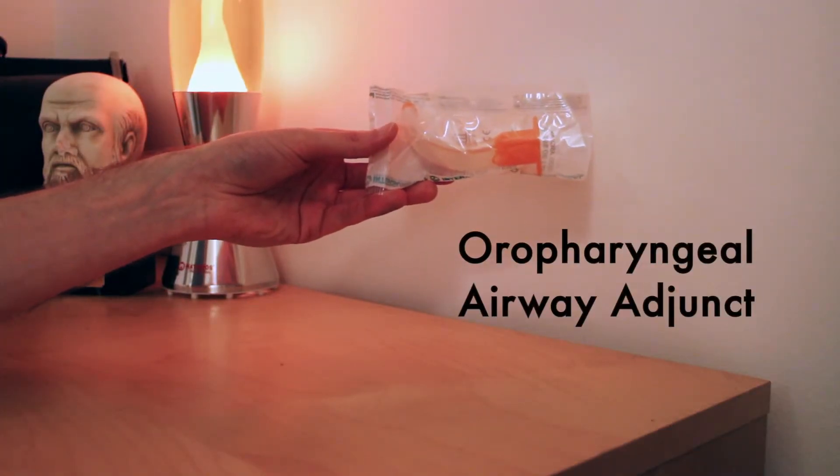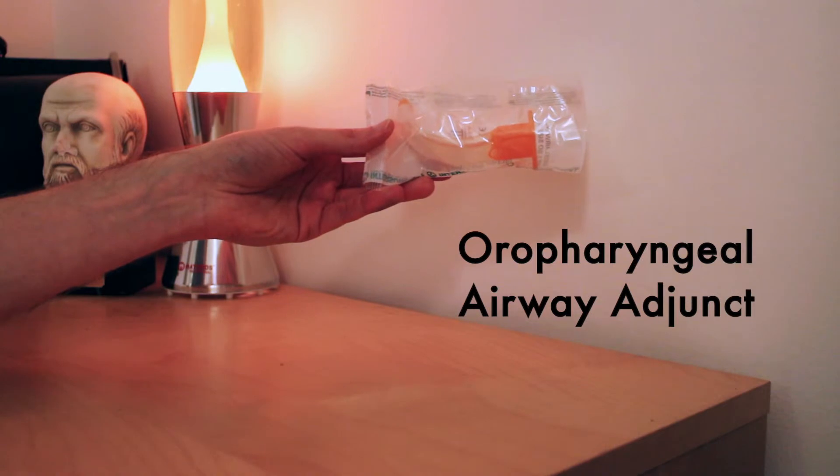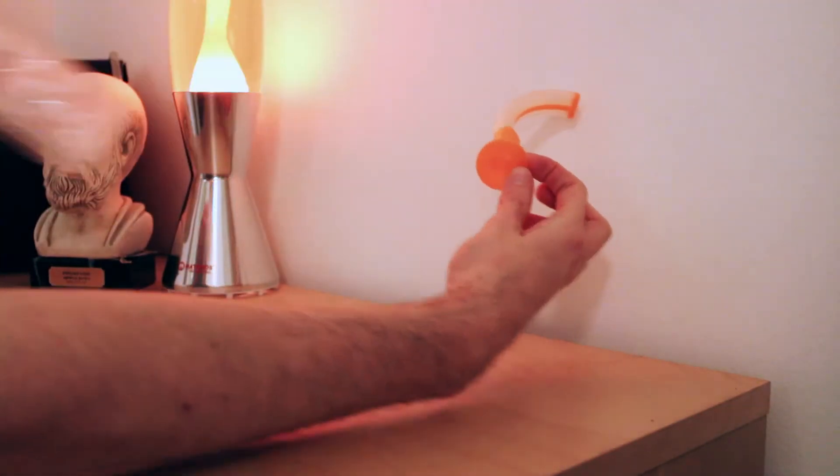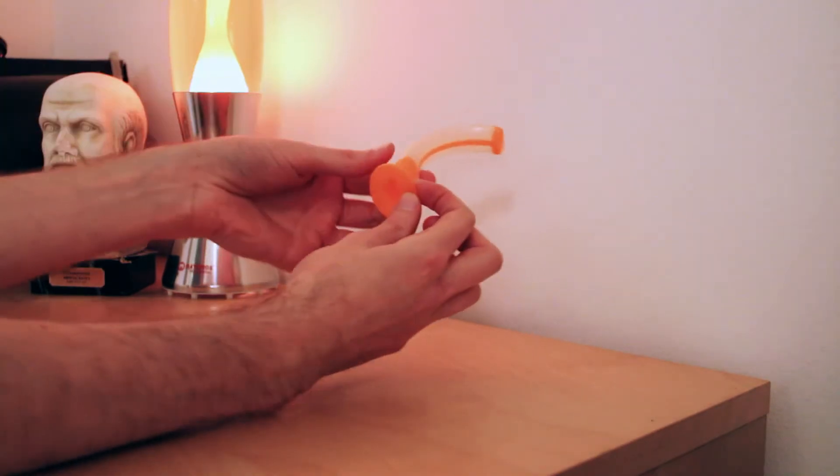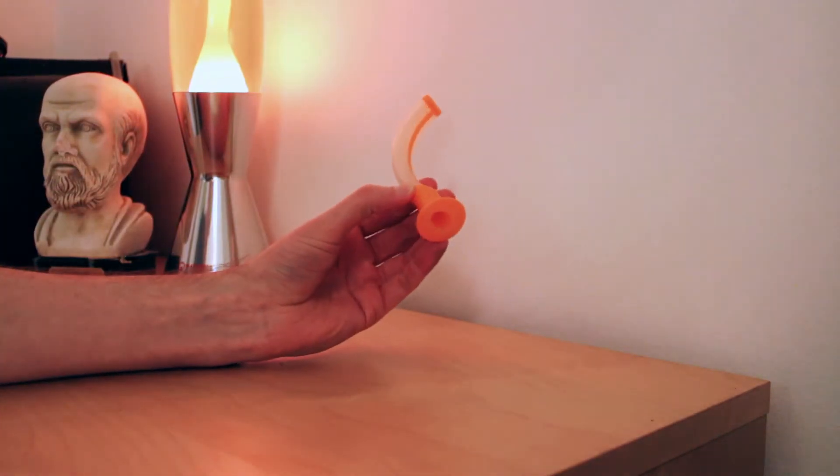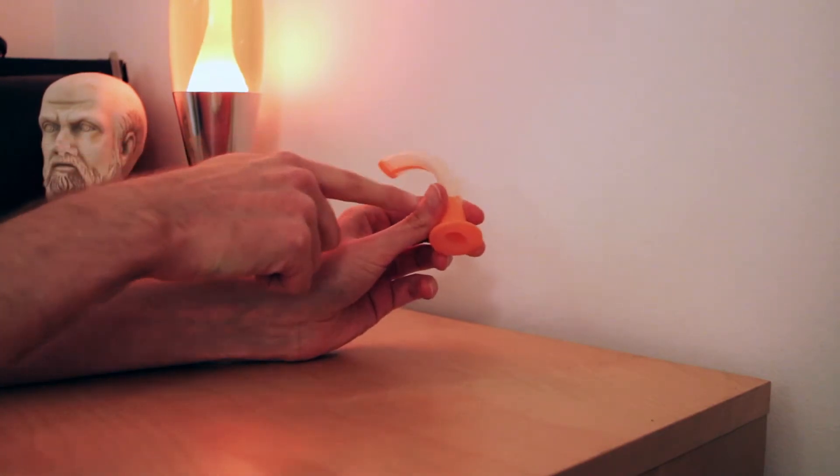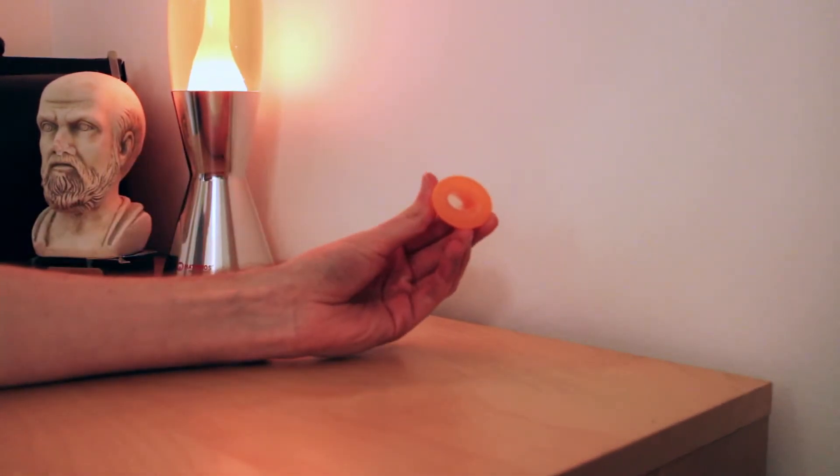This is an oropharyngeal airway adjunct. It is a single use device that comes in a sterile bag. If you don't know what it is, you can describe it. It is plastic. It is a tube that is curved with a flange at one end.